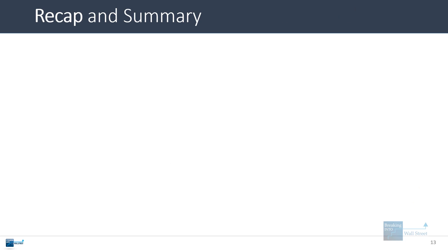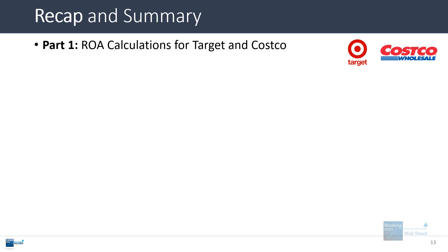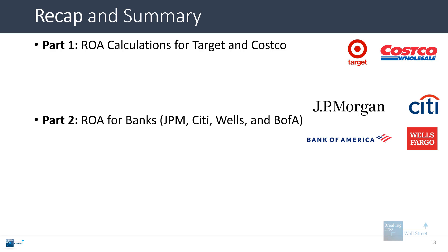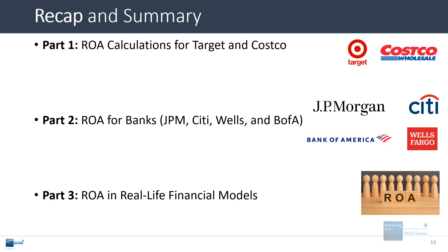So that's pretty much it. Let's do a quick recap and summary. We started with the ROA calculations for Target and Costco — net income divided by average total assets in the period. Overall, our work suggested that Costco is quite overvalued at the moment, not just because of ROA, but because most of its financial metrics are in line with its peers while its valuation multiples are much higher. Then we looked at banks including JPMorgan, Citi, Wells Fargo, and Bank of America, and got a more traditional expected result where banks with stronger ROA and stronger growth — namely JPMorgan — were clearly trading at higher multiples. And we said a few words about ROA in real-life financial models: it's not really a driver in most cases, but it is something you can look at to check your work and make sure your assumptions and outputs make sense.